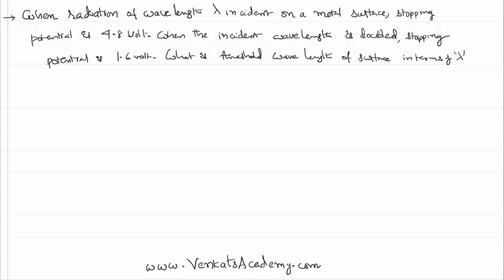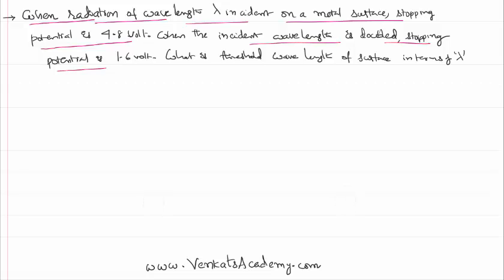Hello everyone, welcome to the video lesson. In this video lesson we are solving a problem on the photoelectric effect. The problem is: when a radiation of wavelength lambda is incident on a metal surface, the stopping potential is 4.8 volts. When the incident wavelength is doubled, the stopping potential is 1.6 volts. What is the threshold wavelength of the metal surface in terms of the incident wavelength lambda?